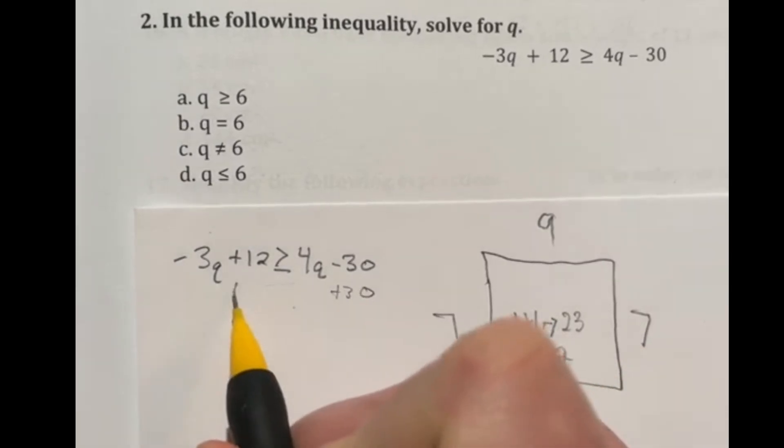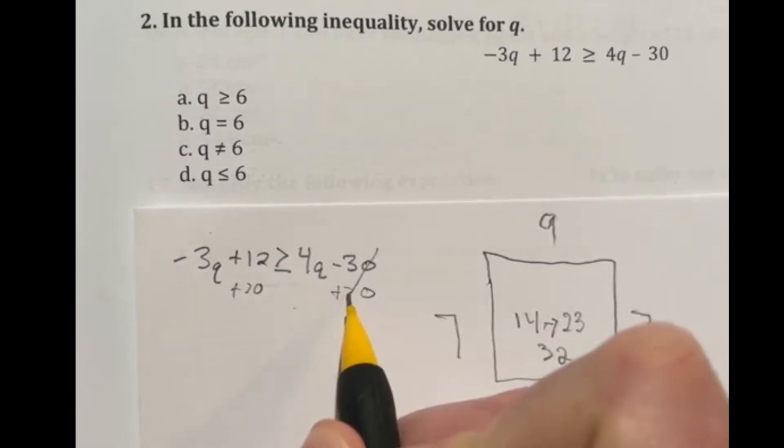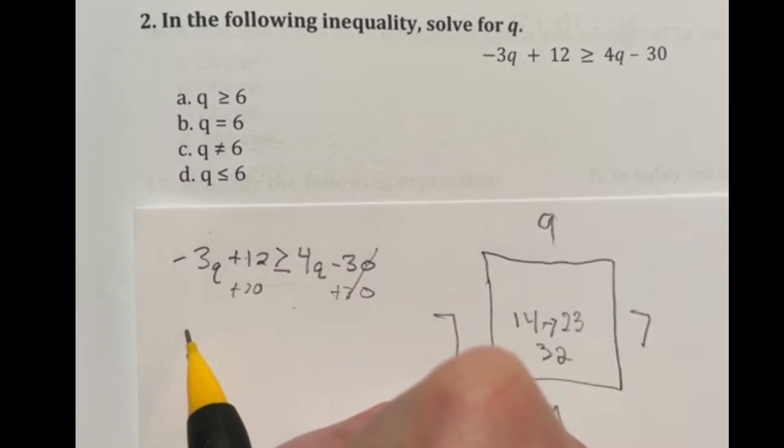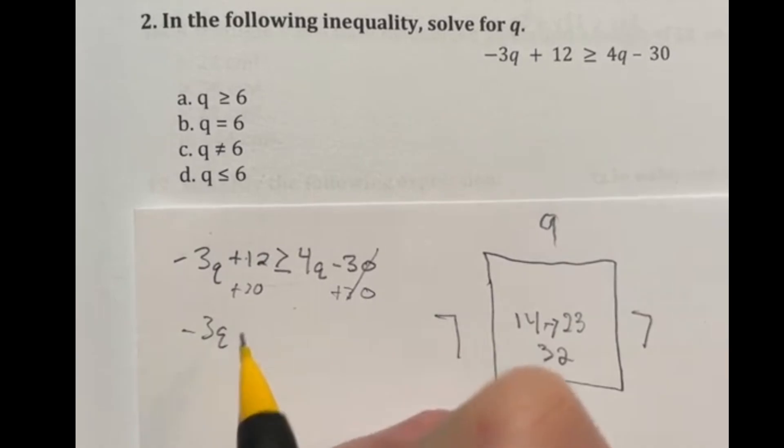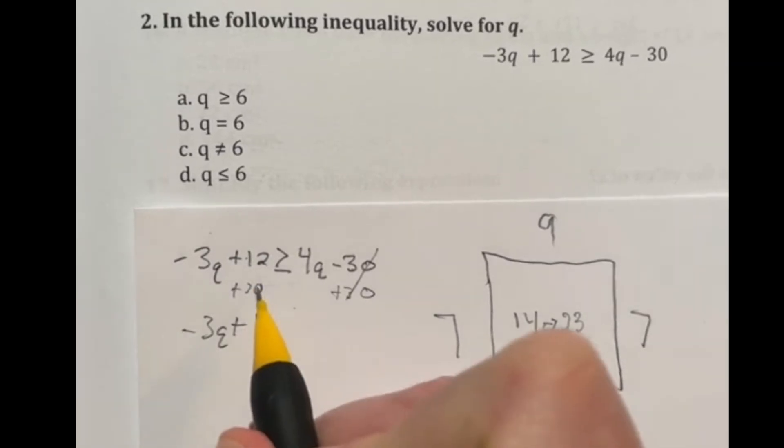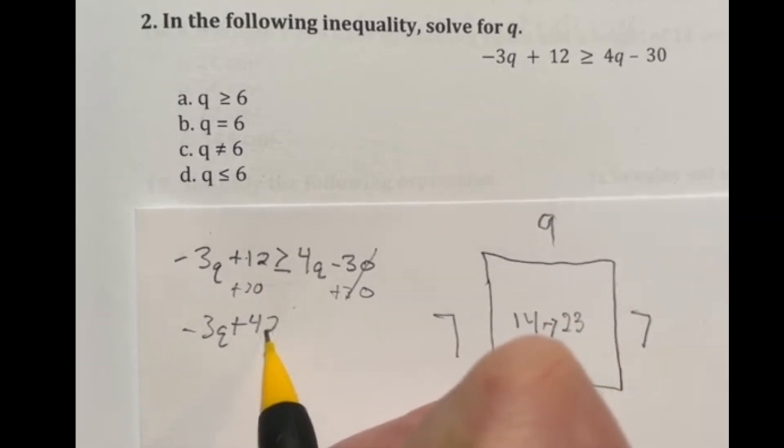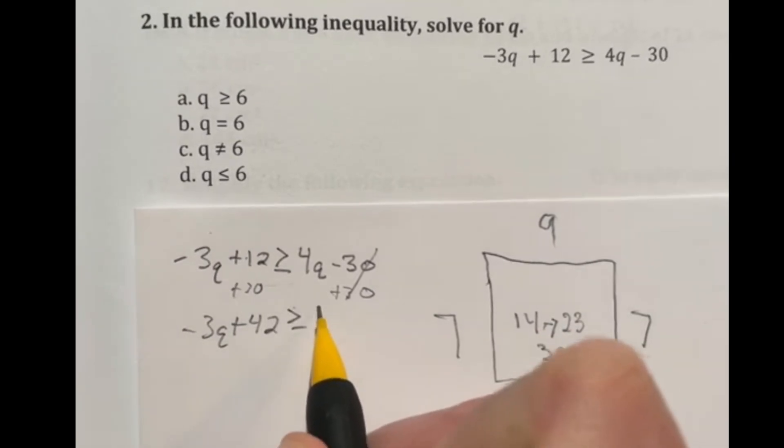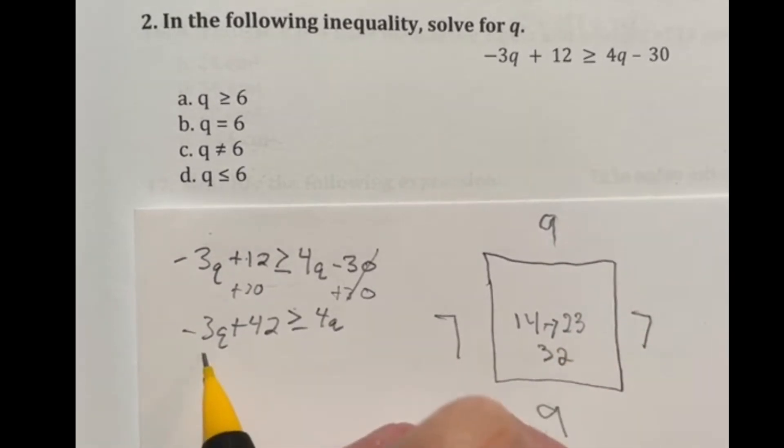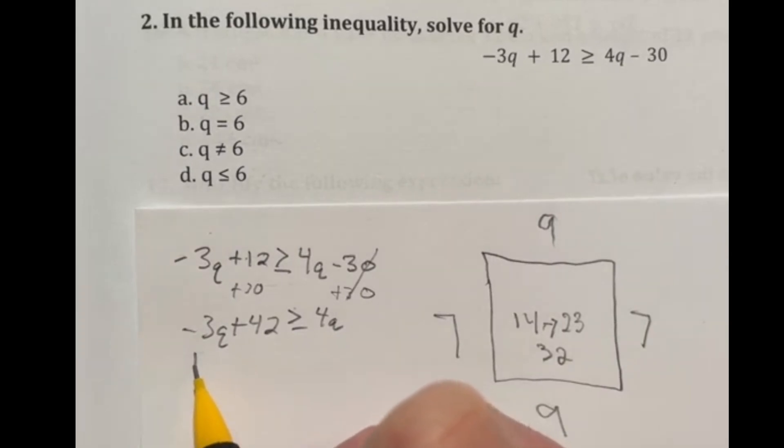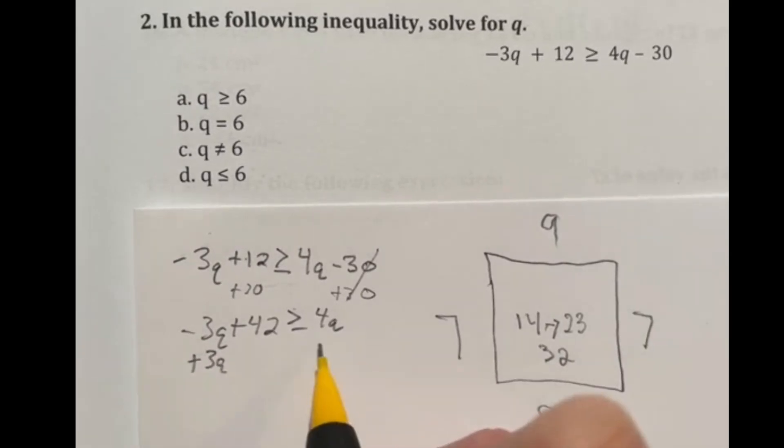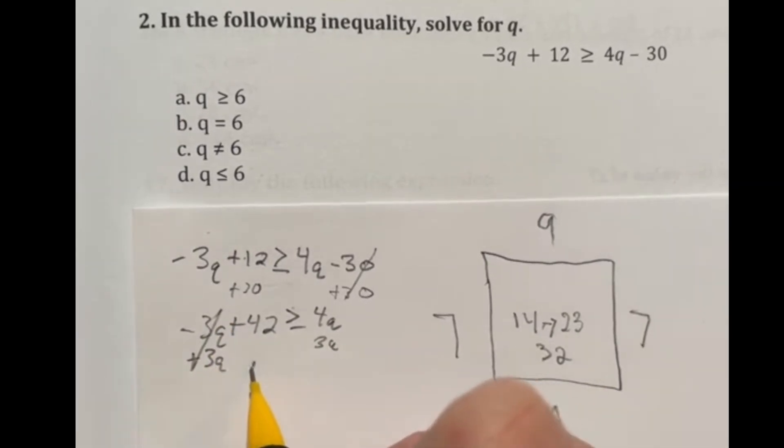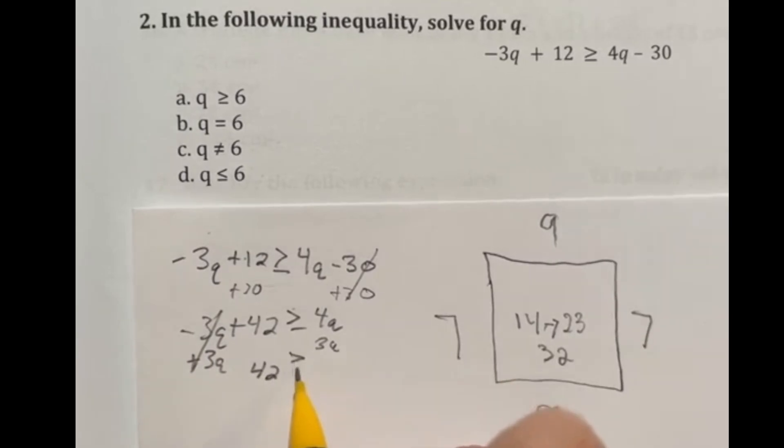So first things first, let's add the 30 to both sides to cancel out that 30 over here, giving me that we have -3q + 30 + 12 is going to be 42 ≥ 4q. Then I'm going to go ahead and do the same thing with the -3q. So add 3q to both sides.